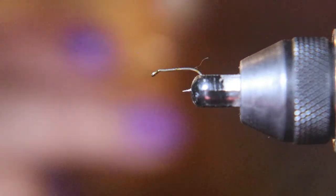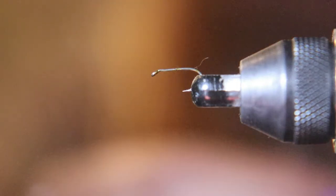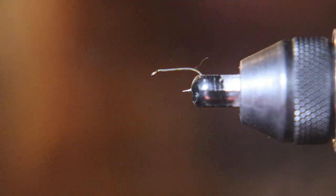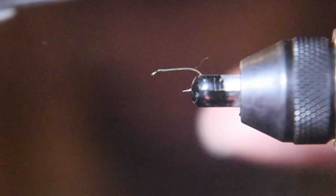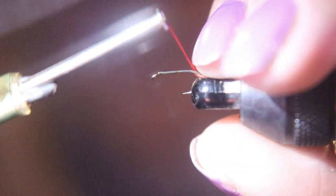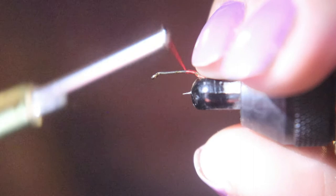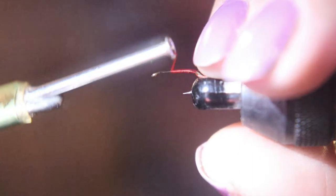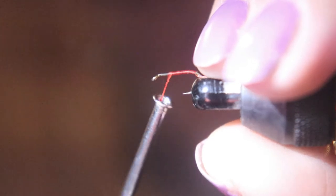In this fly we're using a size 18 standard hook and red thread. We're going to start at the back of the hook, wrap it up to the eye of the hook and wrap it back and back up again.